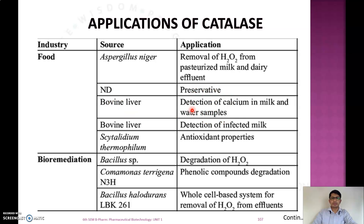Catalase from bovine liver is used for detection of calcium in milk and water samples, detection of infected milks, and has antioxidant properties. In bioremediation, catalase from Bacillus species is used for degradation of hydrogen peroxide, degradation of phenolic compounds, and in cell-based systems for removal of hydrogen peroxide from effluents.